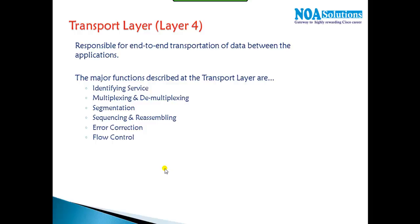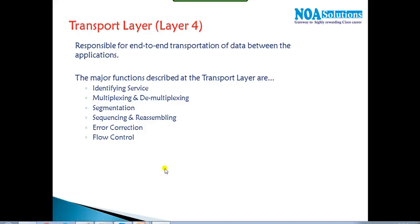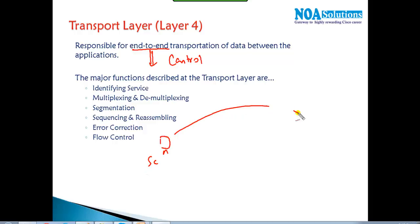The next layer we'll talk about is the transport layer. As we've seen in previous sections, the application layer provides a user interface, the presentation layer defines the data format, and the session layer creates, maintains, and terminates sessions. The transport layer's responsibility is to ensure end-to-end transmission of information. Once the session layer builds a session, the transport layer looks after the complete end-to-end transmission.